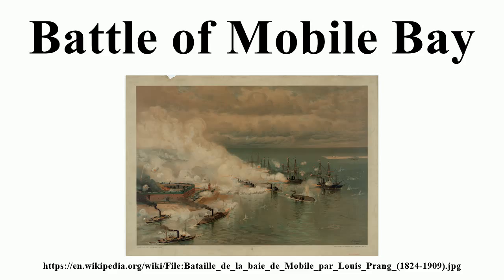Given respite by the Union strategy, the Confederate Army improved the defenses of Mobile Bay by strengthening Fort Morgan and Fort Gaines at the entrance to the bay. In addition, they set up Fort Powell, a smaller work that guarded the Grant's Pass channel. Grant's Pass was also obstructed by a set of piles and other impediments, which had the effect of diverting the tidal flow to Heron Pass.